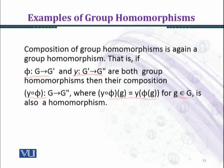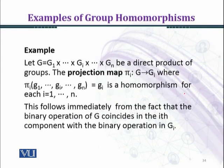Where (ψ∘φ)(g) equals ψ(φ(g)) for g belongs to G, is also a homomorphism. This fact will apply in our next examples. If you have two homomorphisms, then their composition is also a homomorphism.